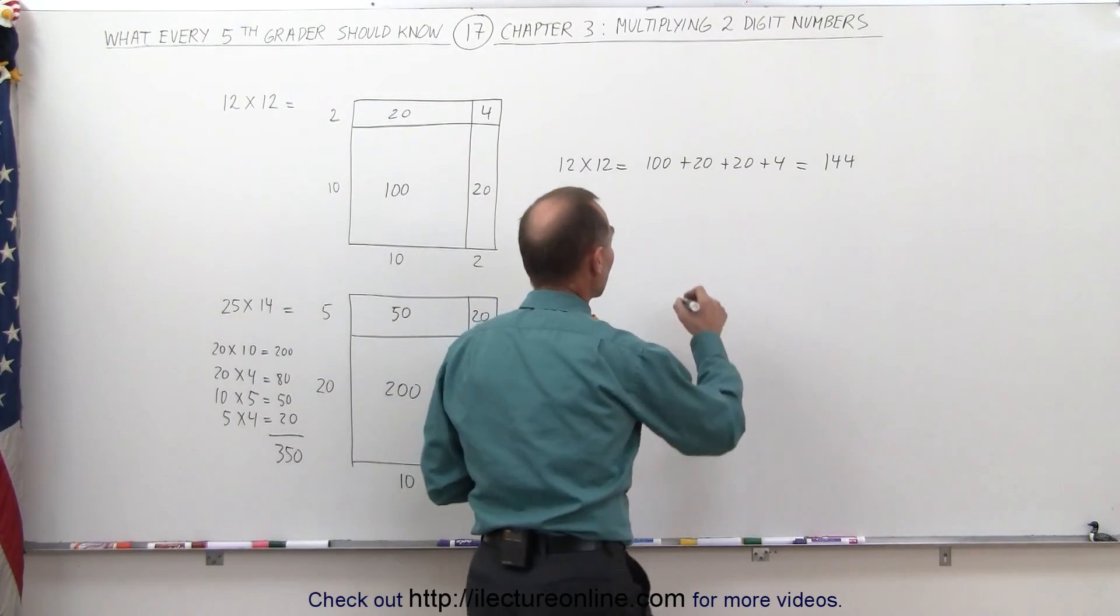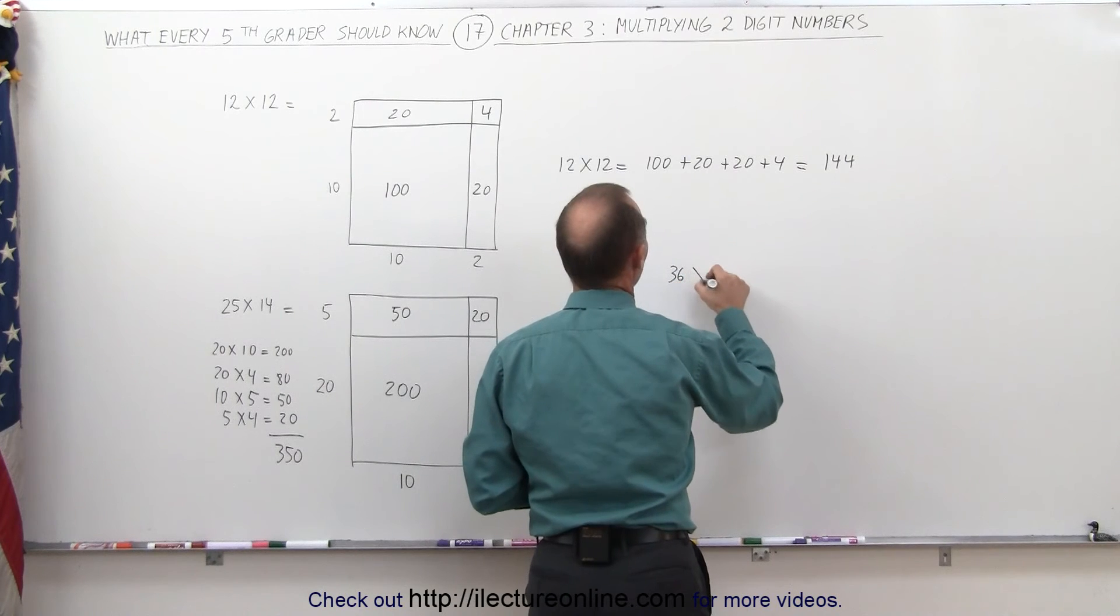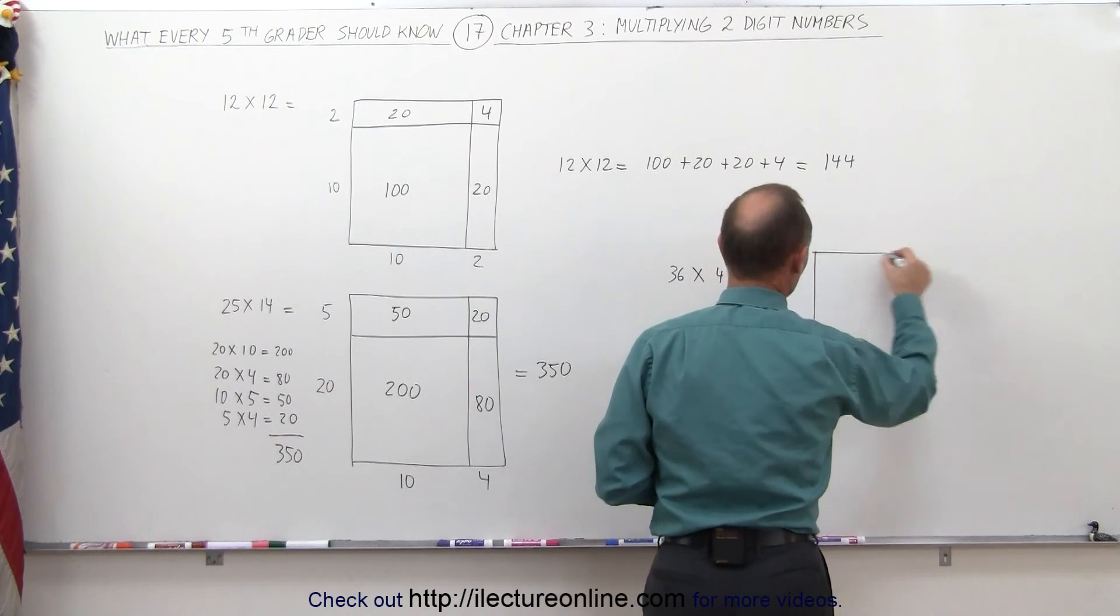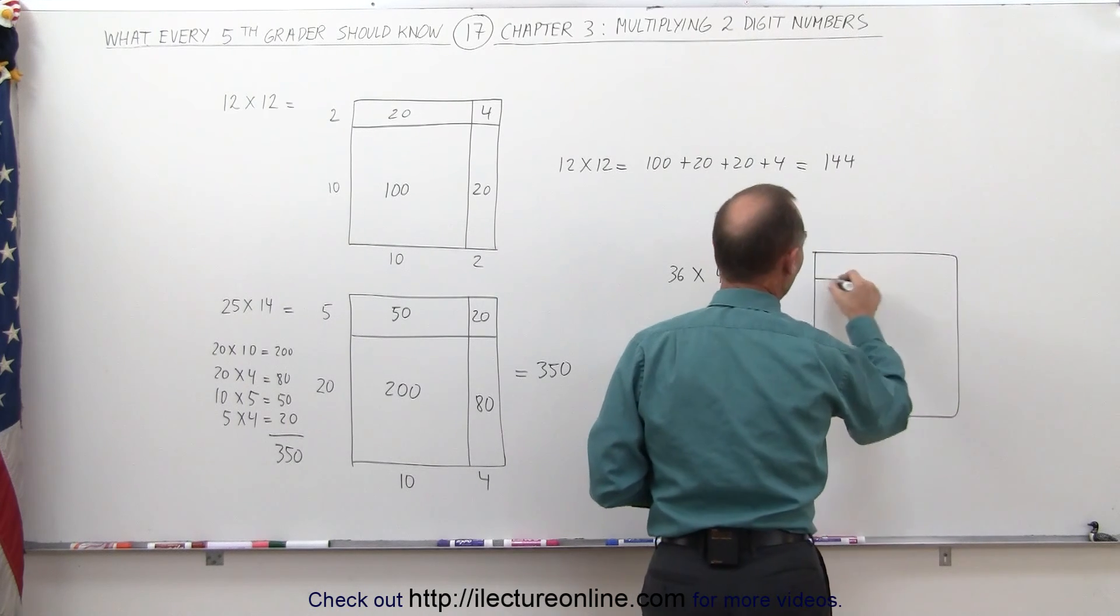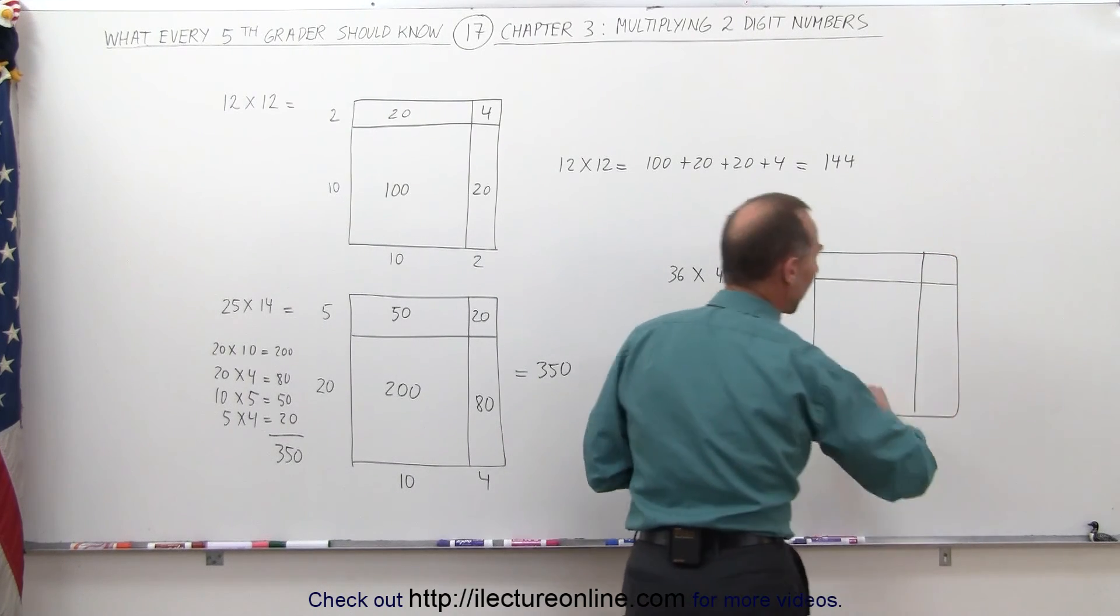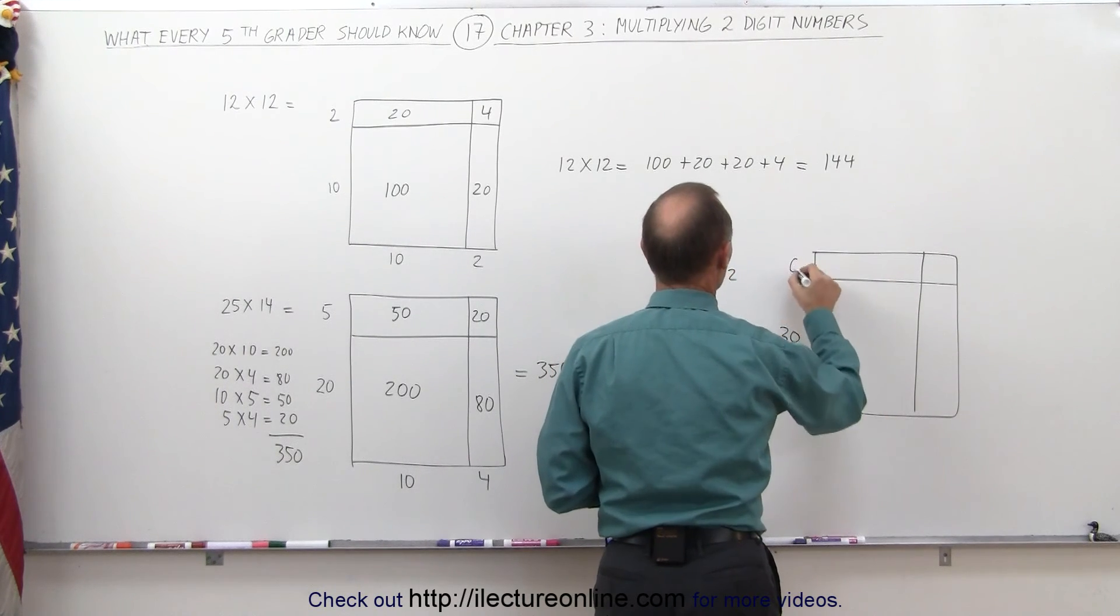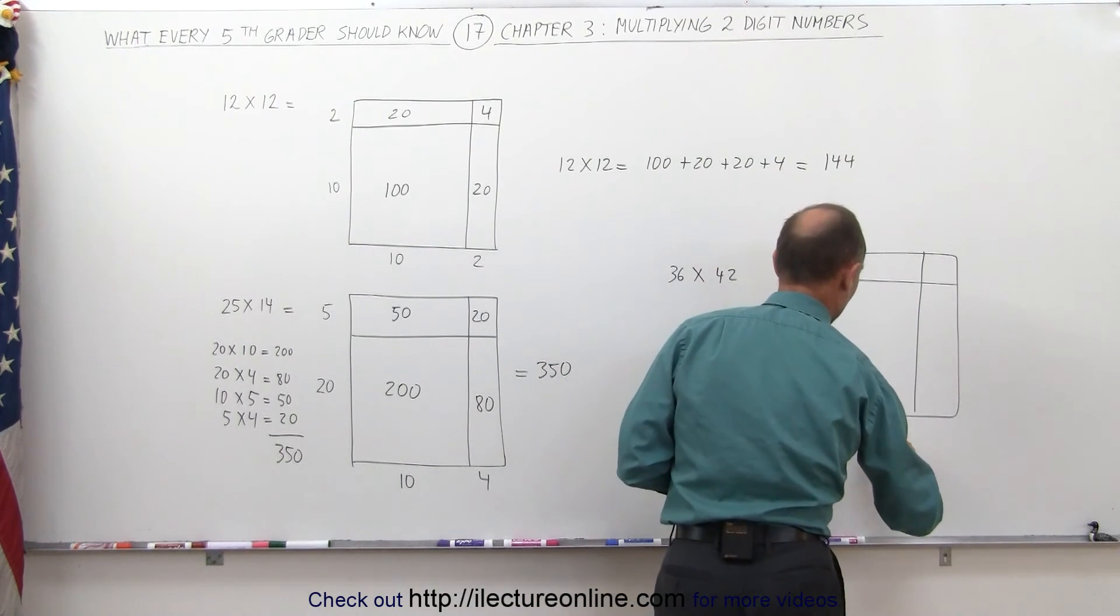For example, let's try something else. Let's try the number 36 times 42. So you make a square. Draw a line here. You draw a line there. You don't really care how big those lines are. 36 is 30 and 6. 42 is 40 and 2.